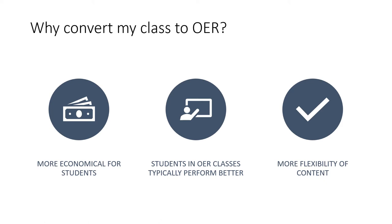Students in today's economy often have to make difficult choices. Indeed, they may have to choose between buying a textbook for their class or having the money for gas to drive to that class. Finally, choosing OER can allow you to have greater flexibility with the information that you present to your class. We all know that it can be a pain to adopt a new edition of a book, and we often have to wait multiple semesters to make changes. With OER texts, outdated information can be easily adapted or corrected without the need to go through a traditional publisher.